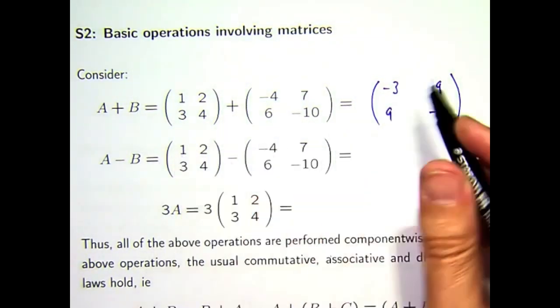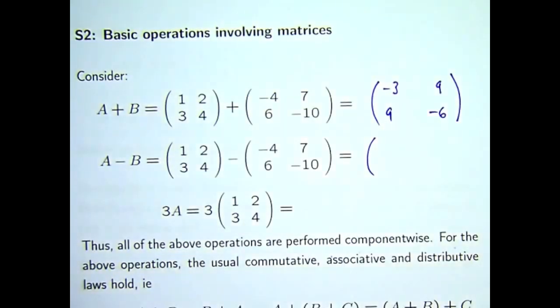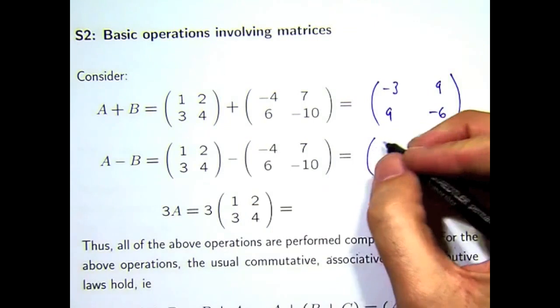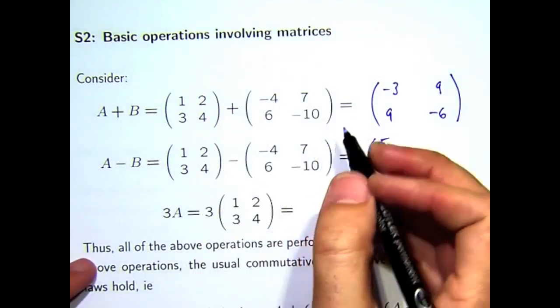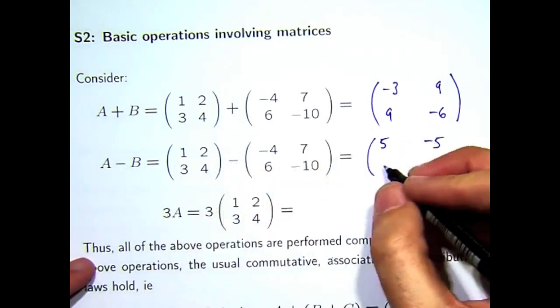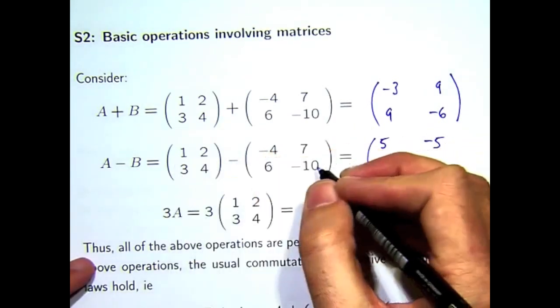So, if you want to take one matrix away from the other, well, technically speaking, what you could do is add the negative of a matrix. So, you take all the elements, multiply them by negative one. But, just keeping it very simple, you would just work on the corresponding components. So, it's going to be one minus minus four, two minus seven, three minus six, and four minus negative ten.